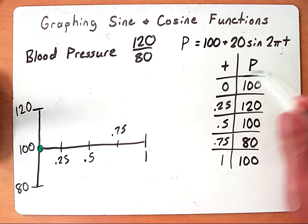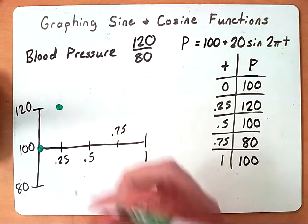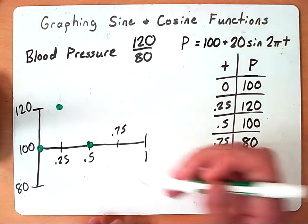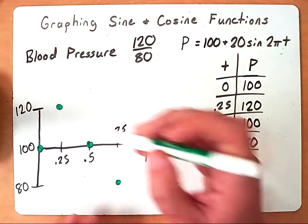At 0.25, we've risen to 120. At 0.5, we've gone back to 100. At 0.75, we'll be at 80. And at 1 second, we'll be back at 100.